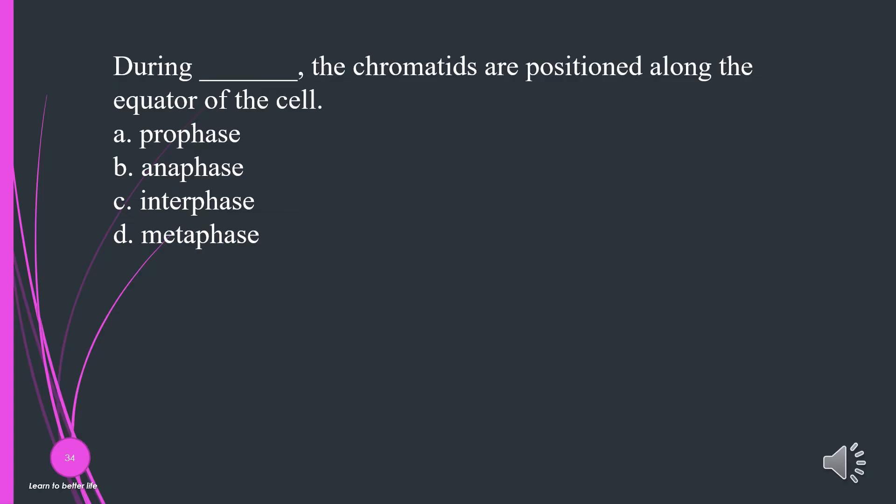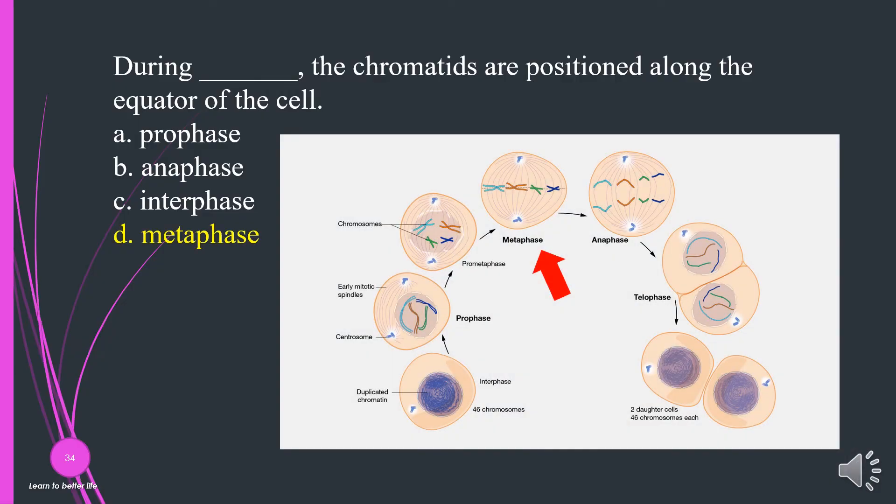During what phase are the chromatids positioned along the equator of the cell? A. Prophase. B. Anaphase. C. Interphase. D. Metaphase. The answer is D, metaphase.